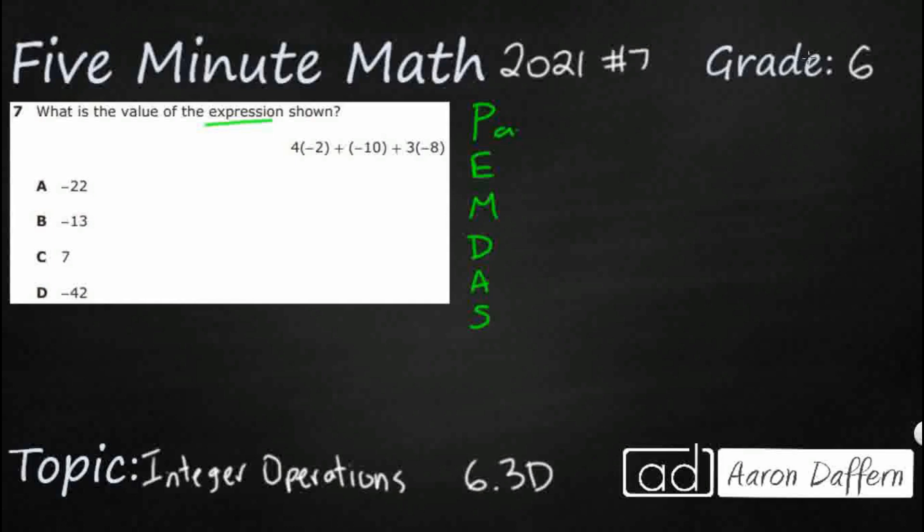Now the first one is P parentheses, but it's kind of confusing because if you look, you see three sets of parentheses here, the negative 2, the negative 10, and the negative 8. But there's no operations within those parentheses. So when we're looking at the P in parentheses, it's if you were to see something like negative 10 plus 2, that'd be an example.